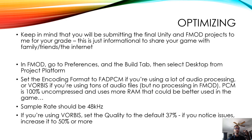Make sure that the sample rate is at 48 kHz. And then, if you're using Vorbis, set the quality to the default 37%. If you notice issues playing through your game, then increase it to 50% and then step it up from there. Play through a couple times and make sure that the audio is as good as you can get it.